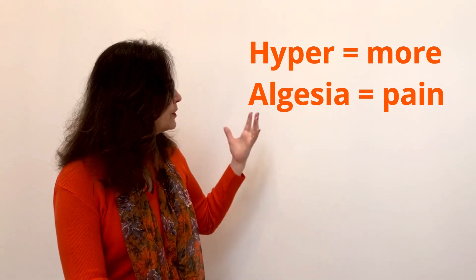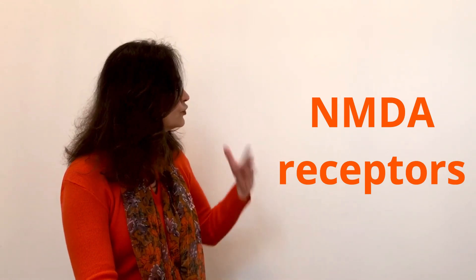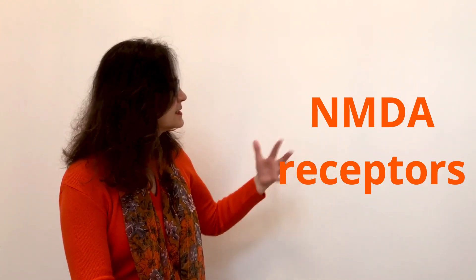The opioid is causing this because they activate some receptors in the pain system that are called NMDA receptors that normally don't exist in a person that doesn't have central sensitization. But when the person has central sensitization, those receptors are open and the opioids will then activate those receptors and cause the hyperalgesia.